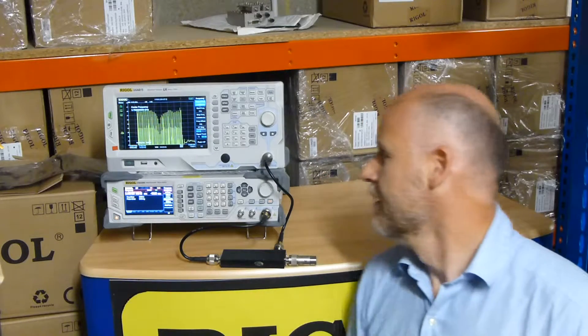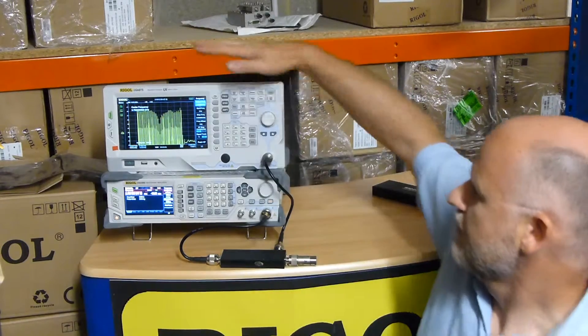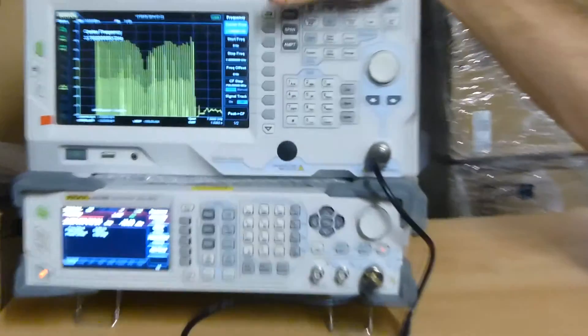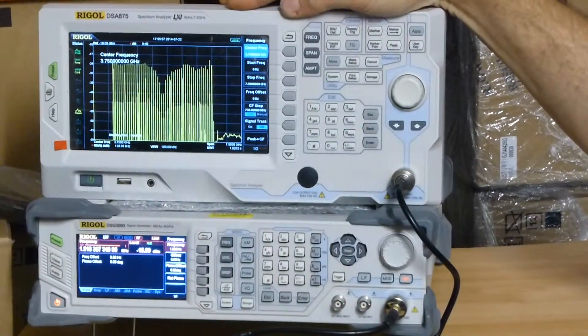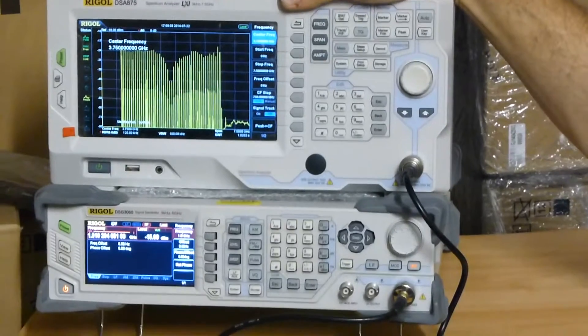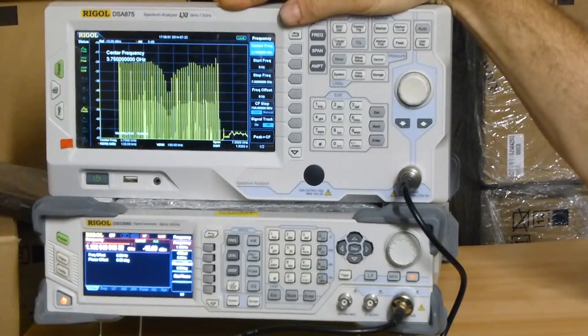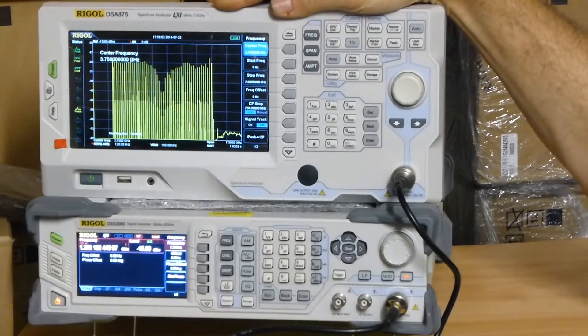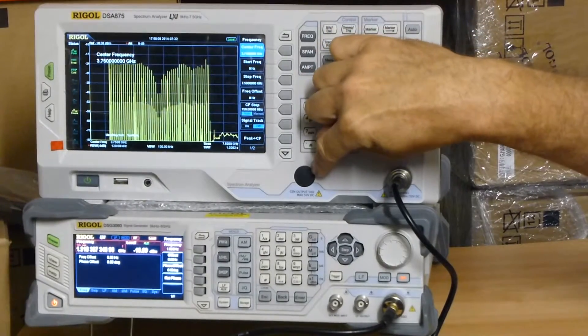So on the instrument stand today, what we've got here is the DSA875. This is a 7.5 gigahertz version of the DSA815, hot off the press, just out. Rigol have released the 7.5 gigahertz version. This one is without a tracking generator.